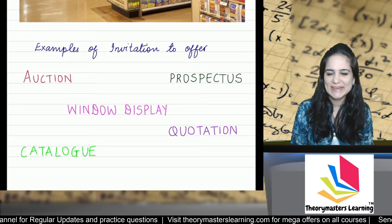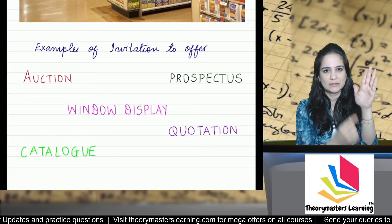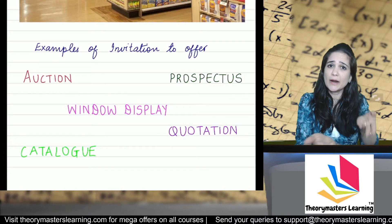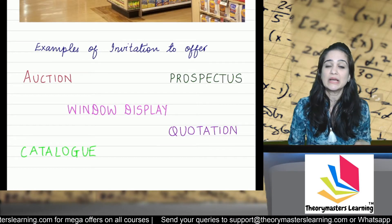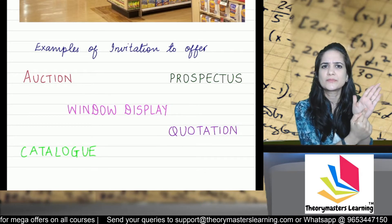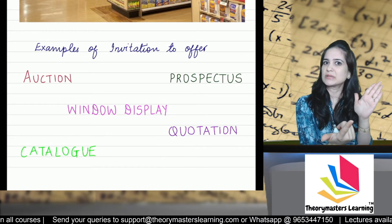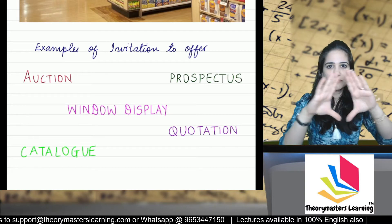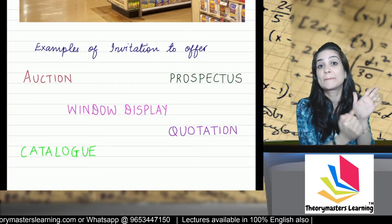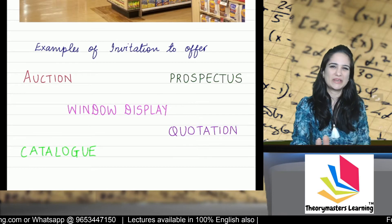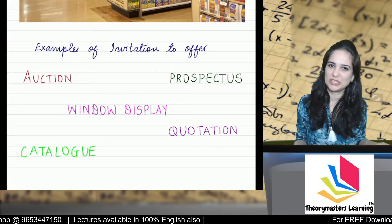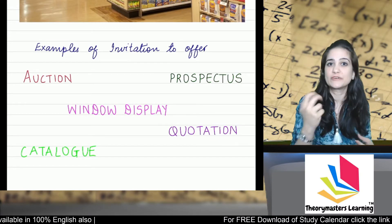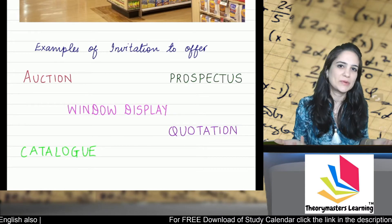Catalog — you must have seen a product catalog. In the catalog, the product's image, description, and price are given. It is inviting offers from the public: we are selling this, if you want to buy, tell us. The customer gives the offer: I want to buy this — I need 10 pieces. The seller says yes sir, we have it available — the customer's offer is accepted. But it could also be that the customer asks for 50 pieces and the seller says sorry sir, we don't have 50. Then the customer's offer is rejected. So through the catalog, they invite offers, and the shopkeeper accepts or rejects them.